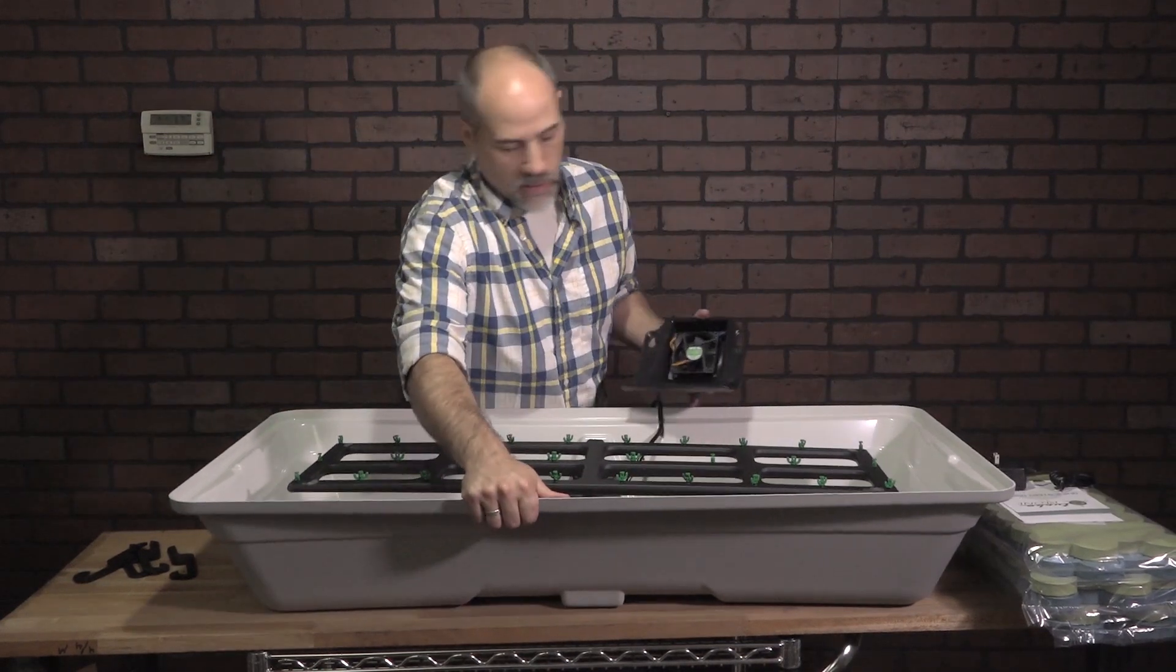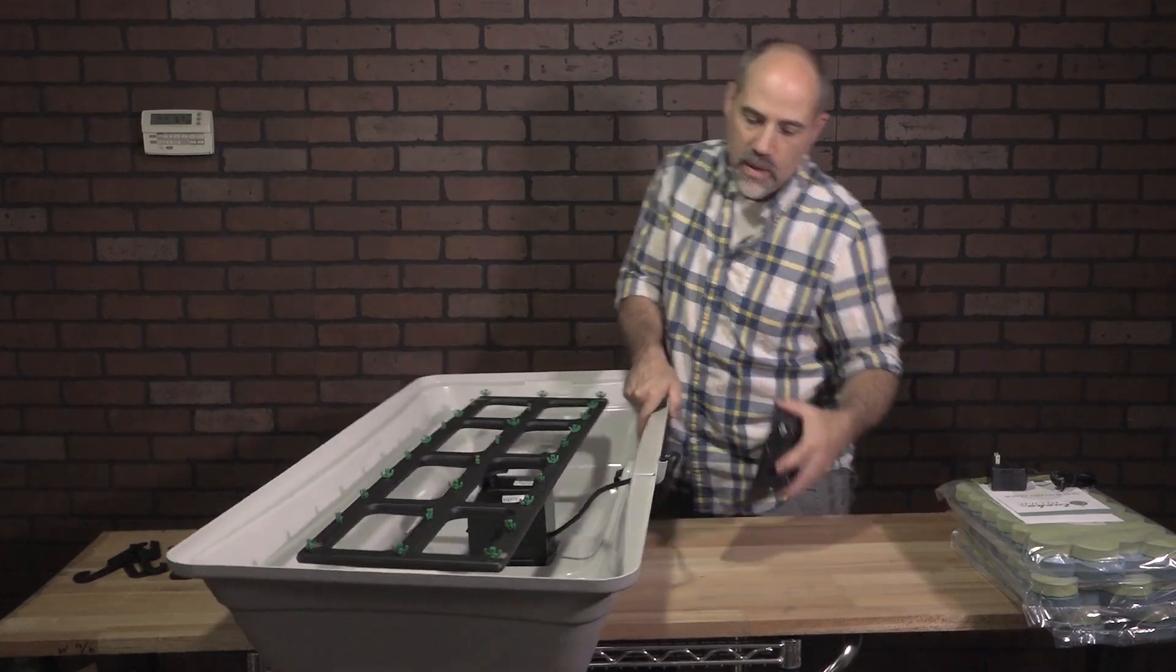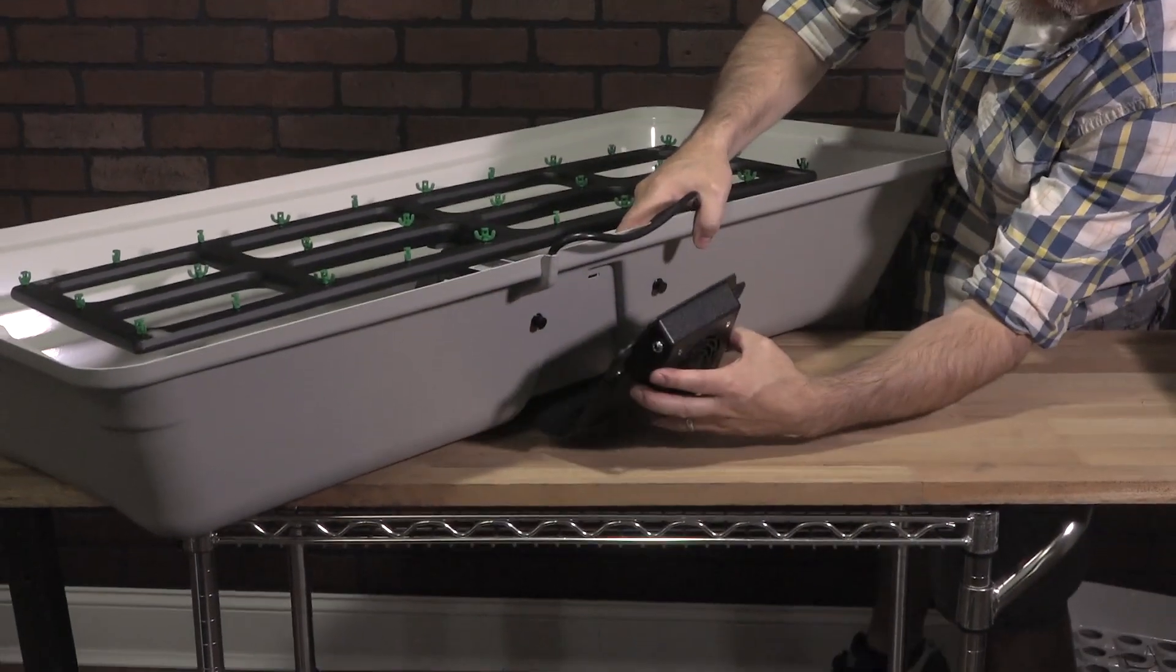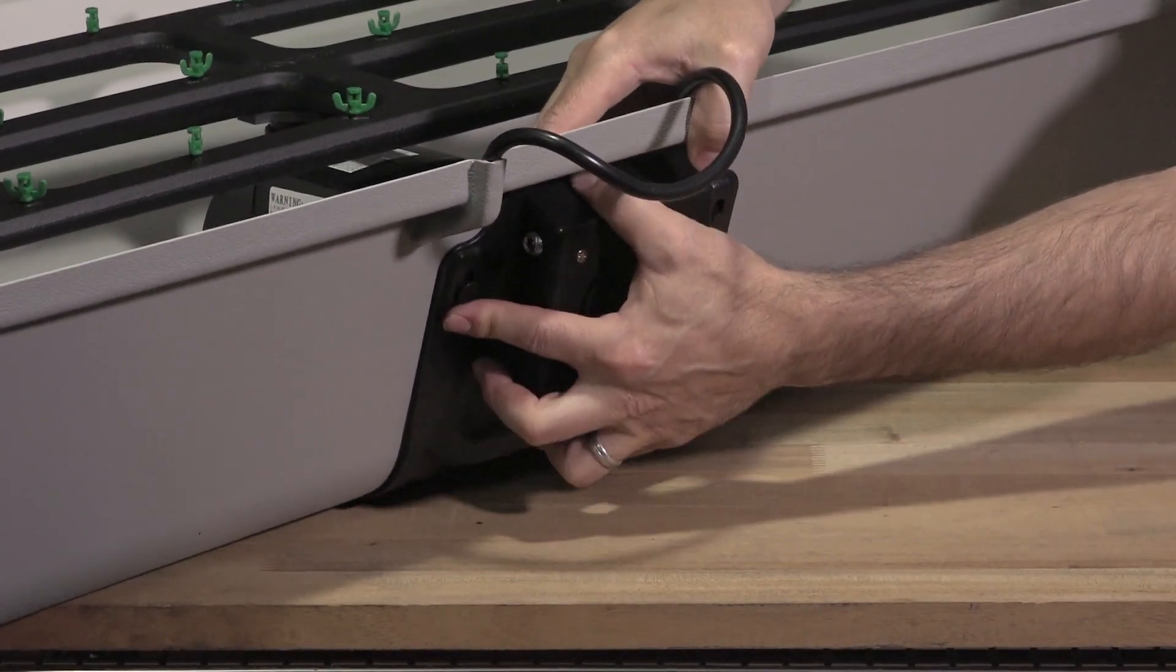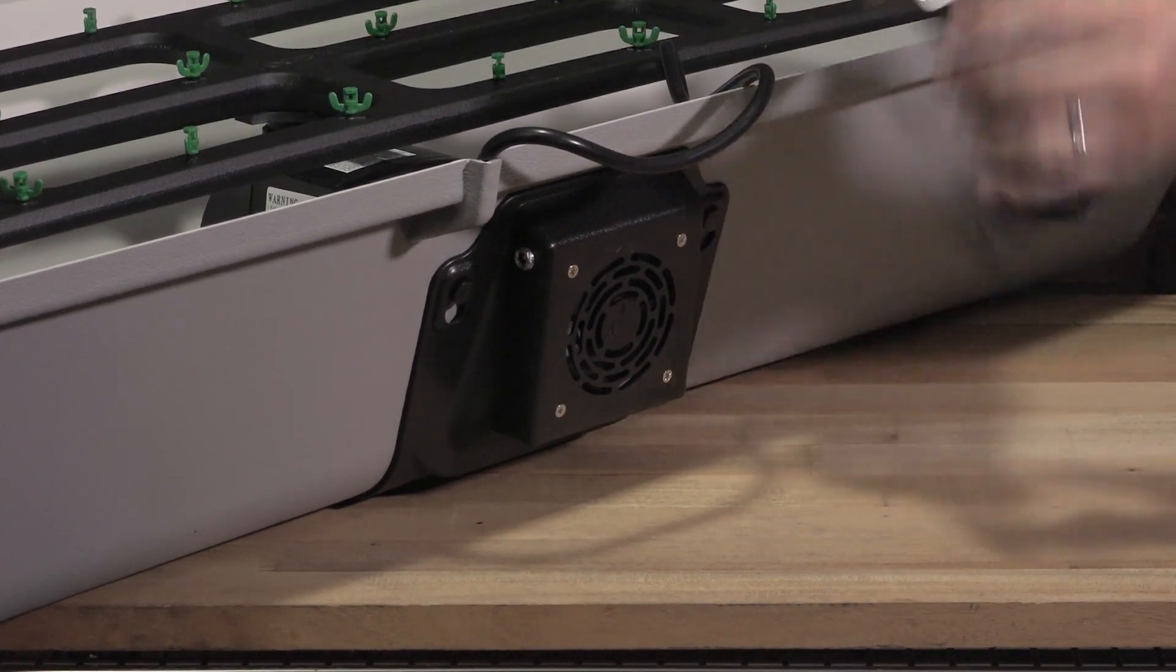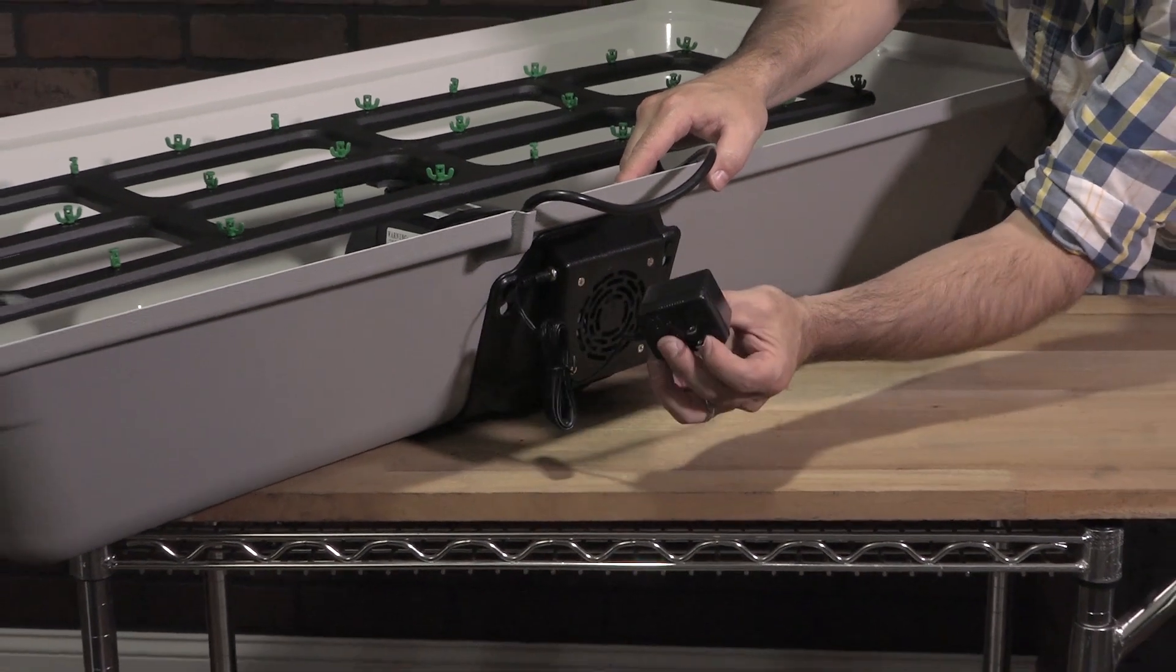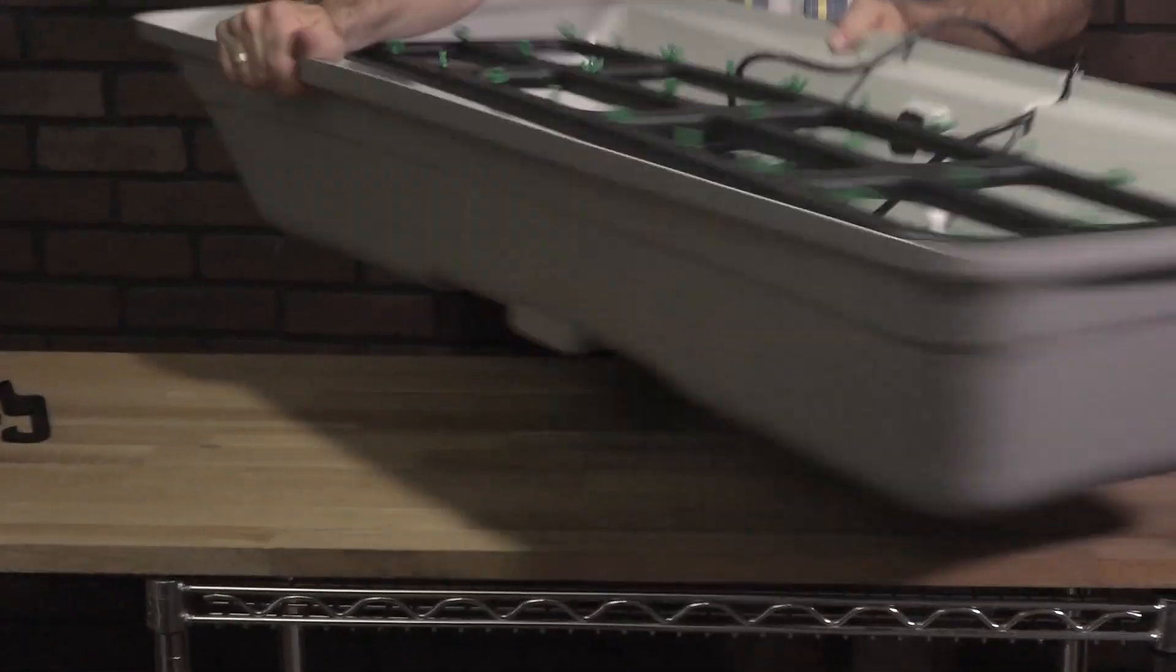Speaking of, here's my fan shroud. And here are the mounting studs on the back. Line those up with the key holes like so. Push in. Done. Again, our power supply. Here's where the main jack is right there, and this to your outlet. Pretty simple.